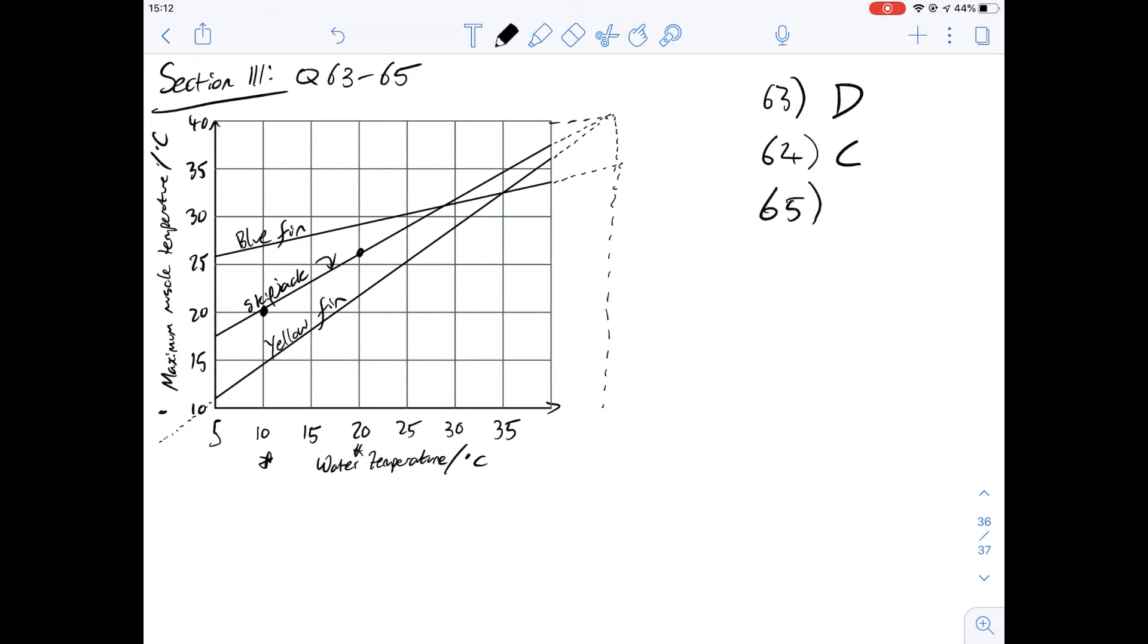And finally for 65, it says which of the three tuna species is most likely to live and be active in water of the greatest temperature range. So before we go through the options let's think about what the question means. The animal that is best suited to live in a warmer water temperature will have a line which has a lower gradient. That's the way I think of it because then there'd be less of a difference between the maximum muscle temperature and the water temperature so it'll be better adapted.